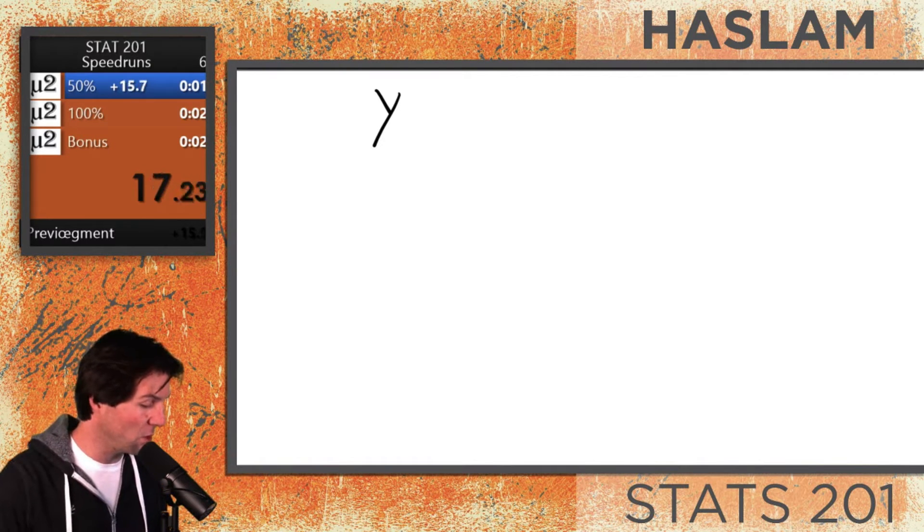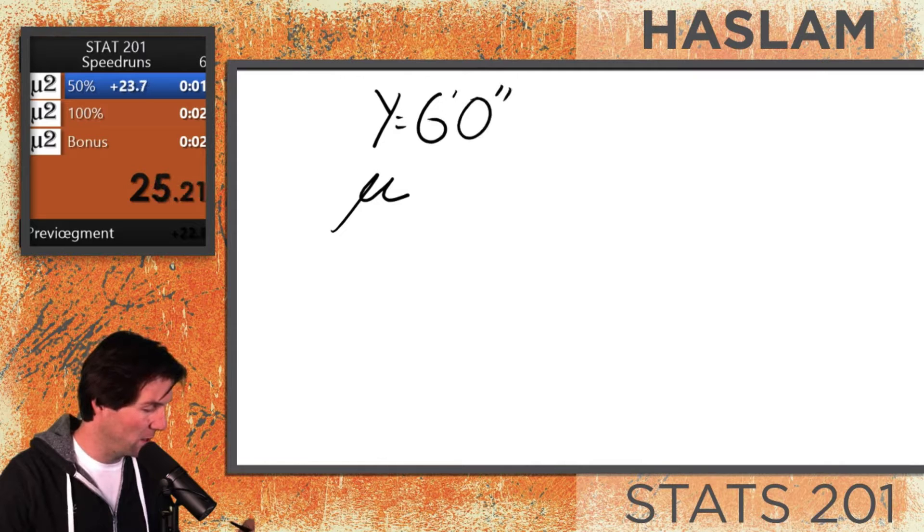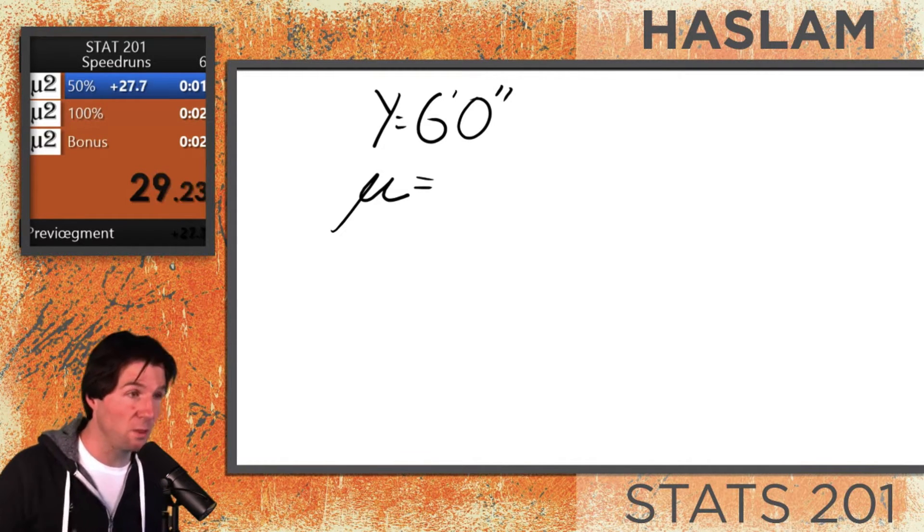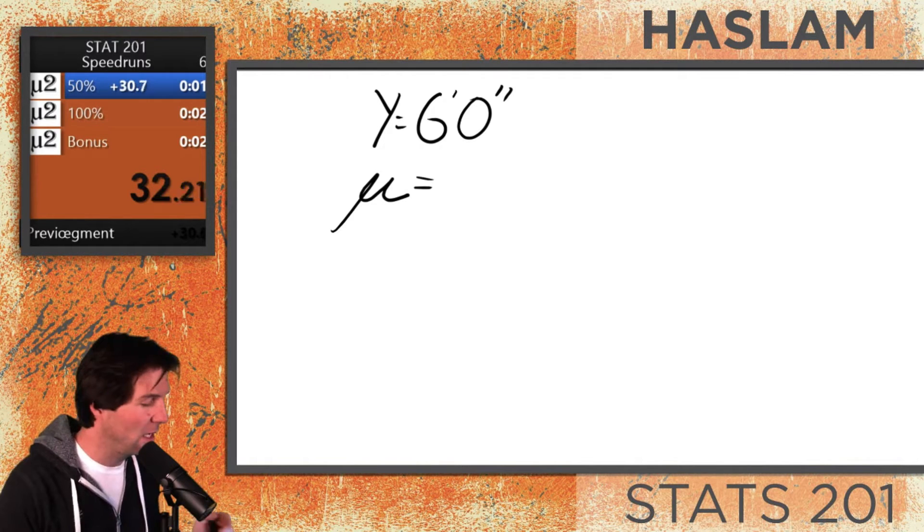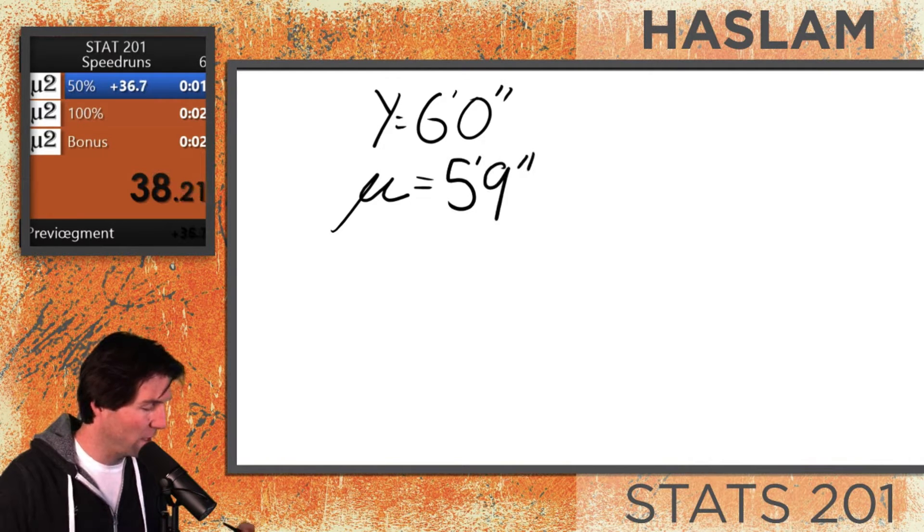We also need to know the mean for the distribution. The mean for the distribution is the average. The symbol is mu, which looks like a u with a little tail on the front of it. We're going to say the average height for guys is five foot nine.